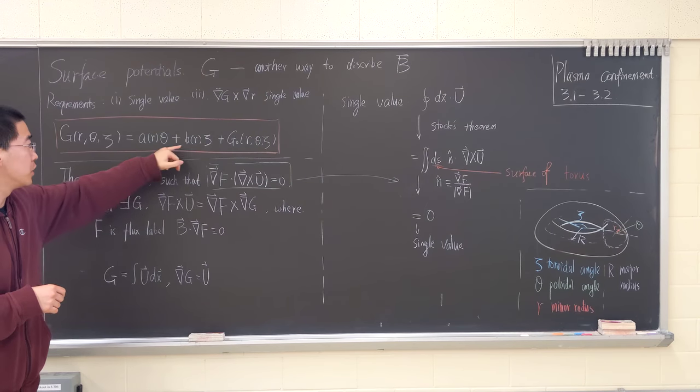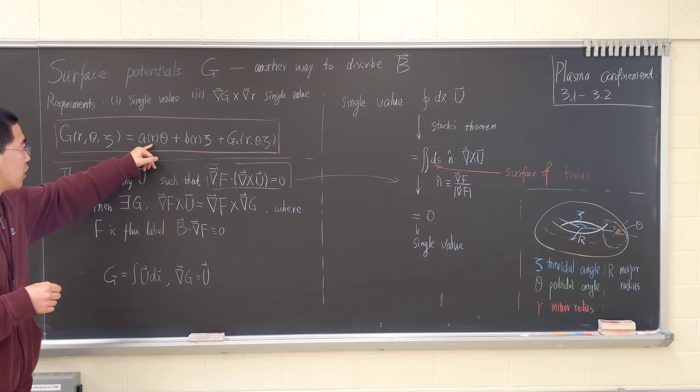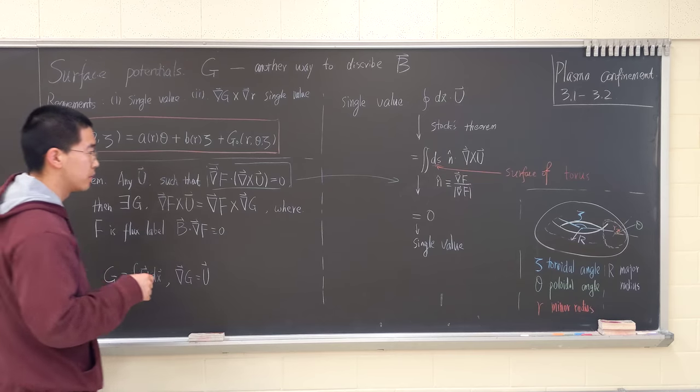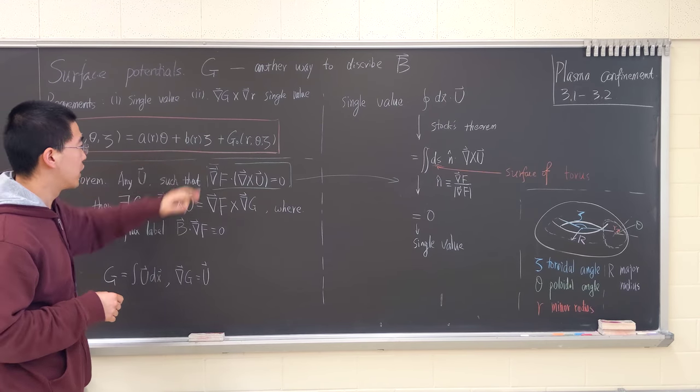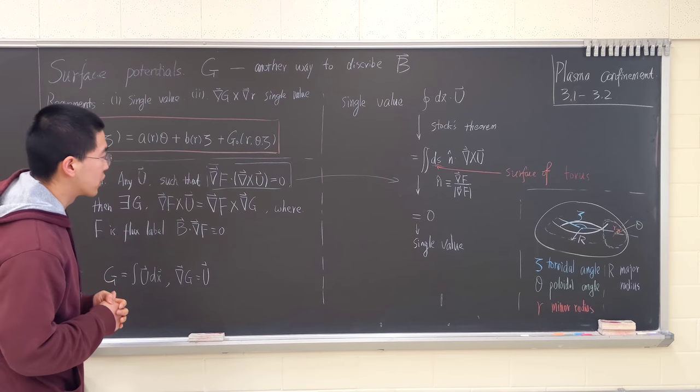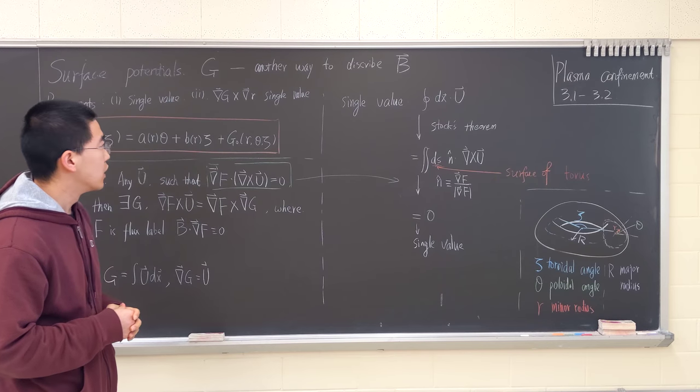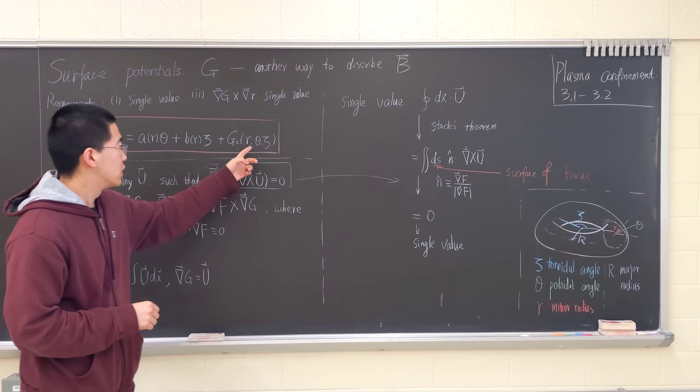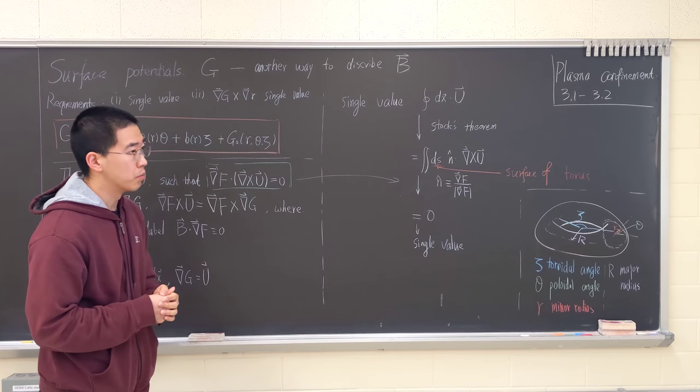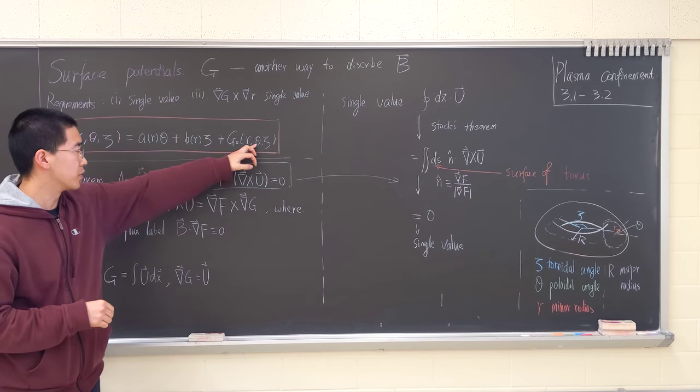A and B are functions of minor radius. Theta is a poloidal angle. Zeta is a toroidal angle. And G naught is a function that has theta and zeta periodicity. It's periodic in terms of theta and zeta.